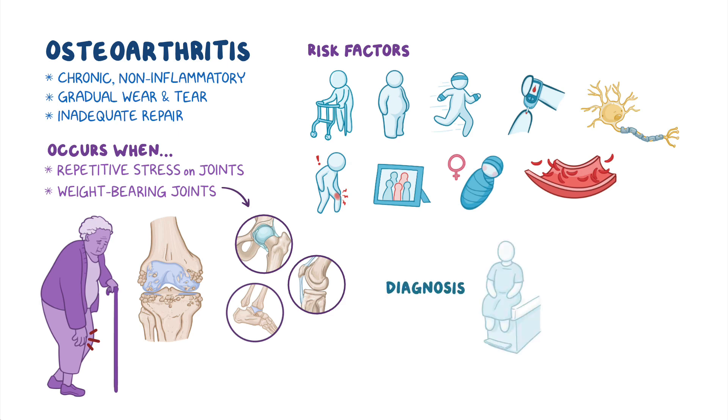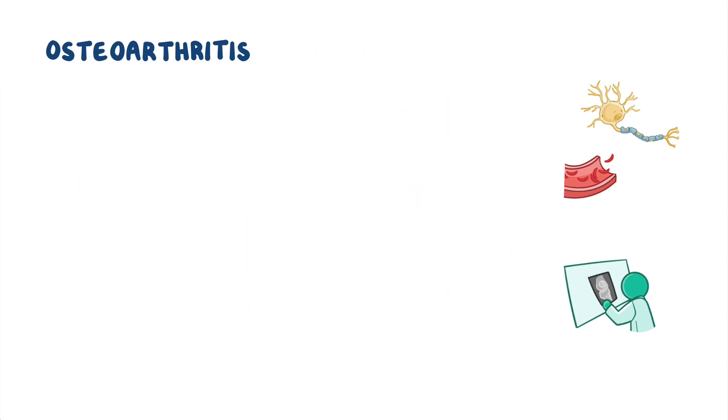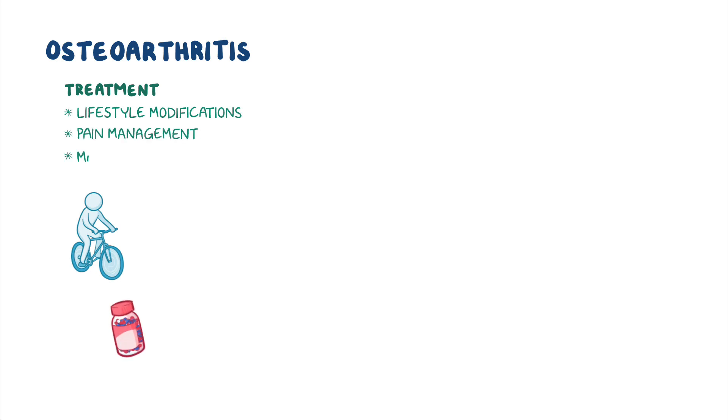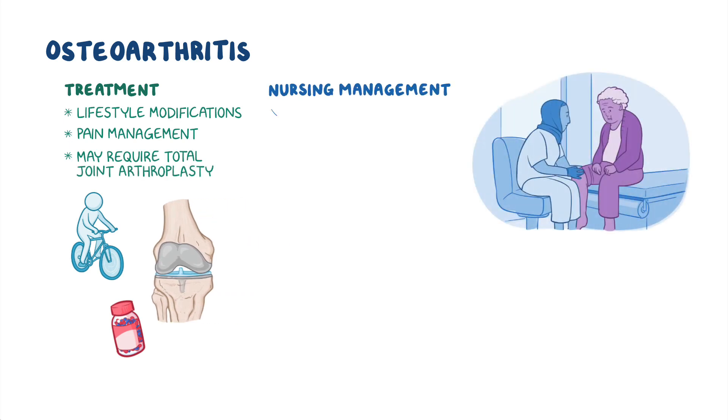Diagnosis begins with a history and physical assessment, followed by X-rays of the affected joints. Treatment consists of lifestyle modifications to slow progression of the disease, along with pain management. In some cases, clients may require total joint arthroplasty. Nursing management is focused on decreasing symptoms, promoting joint health and function, and improving quality of life.